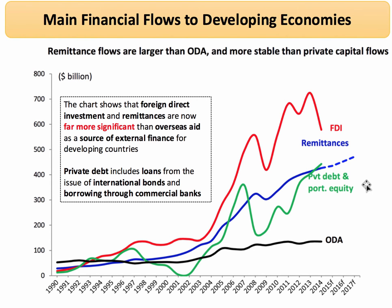This chart shows the net flows of remittances and Foreign Direct Investment, Overseas Aid, and Debt and Portfolio Equity to developing countries since 1990. In 1990, Overseas Aid was the biggest single source of financial flow — it's now down in fourth position. FDI has surged ahead, but notice the volatility of FDI flows. There's also been a significant increase in remittance inflows to developing countries, and that's what we're going to focus on in this topic video.